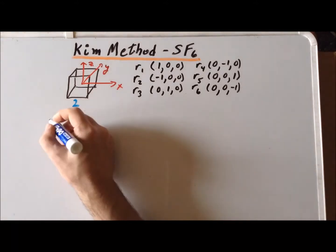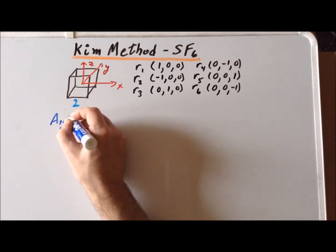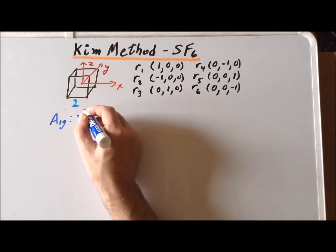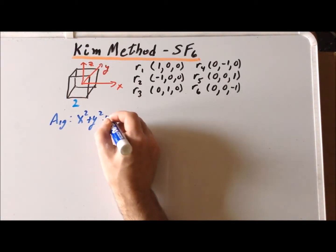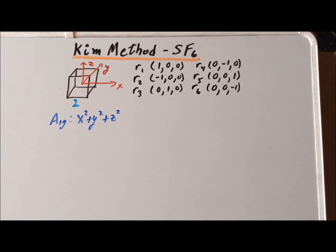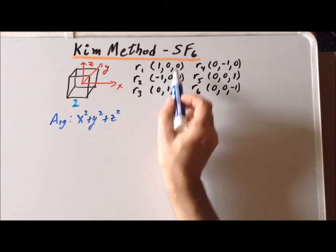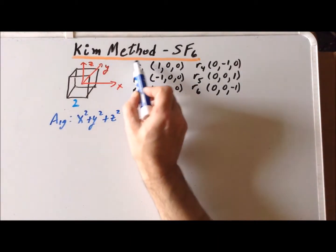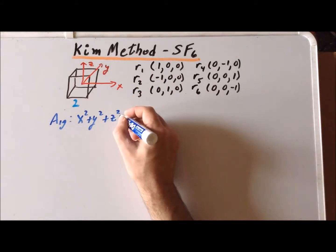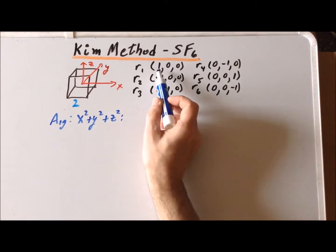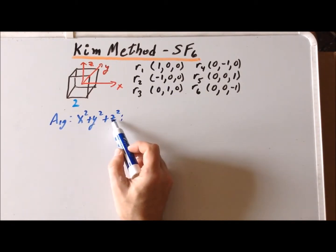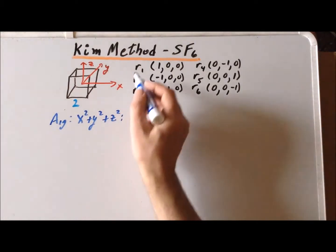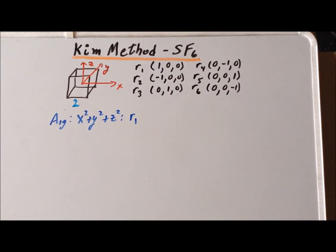Our first stretching motion has A1g symmetry. We notice from the character table for the octahedral group Oh that the basis function is listed as x²+y²+z². We are going to take these coordinates and evaluate the basis function at each particular point, and that value will be the coefficient for the particular vector. For R1, x=1, y=0, z=0, so x²+y²+z²=1. So our coefficient for R1 is 1.